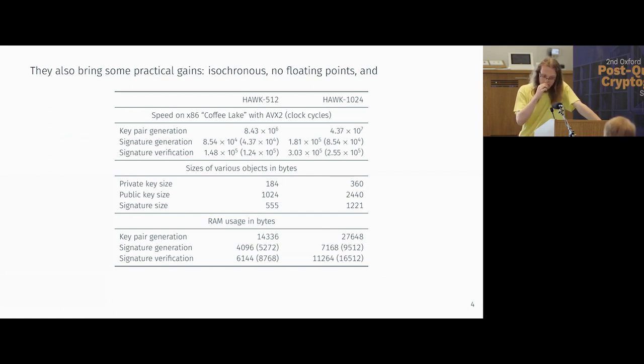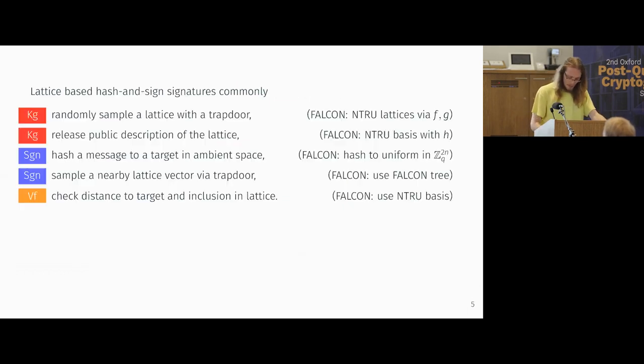Now, we wouldn't make these simplifications that cause such theoretical headaches if we didn't gain anything from them. And what we do gain at the end is some isochronous signature scheme that doesn't have any floating points, and that is rather fast. What is fast is application-specific, but this is on par with some of the faster signature schemes. And the public key size and the signature size are similar to Falcon. And one nice extra thing we get in HAWC is that its RAM usage is quite small. For example, our NIST level 1 parameters can fit in 16 kilobytes.